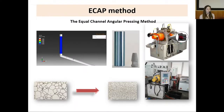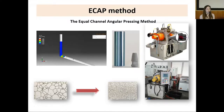You can see some details of this process. The titanium mass is going through the channel and the grain size is reducing. The aim of this method is the reduction of grain size from microstructure to nanostructure.